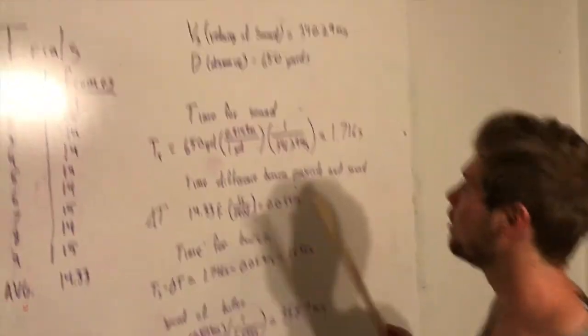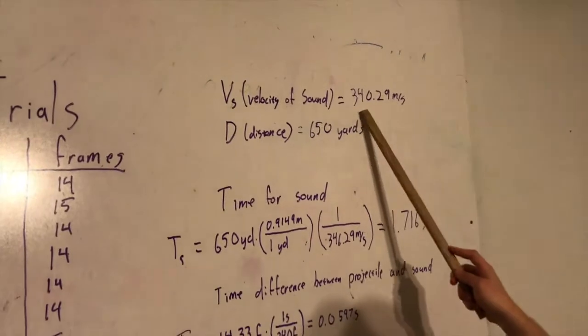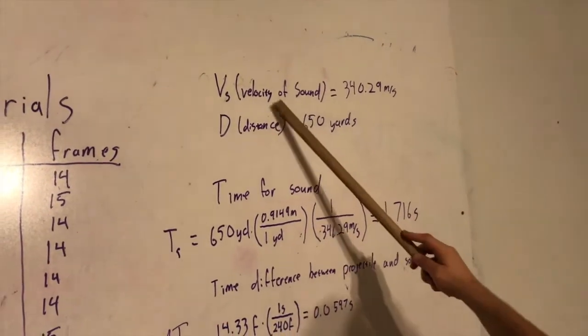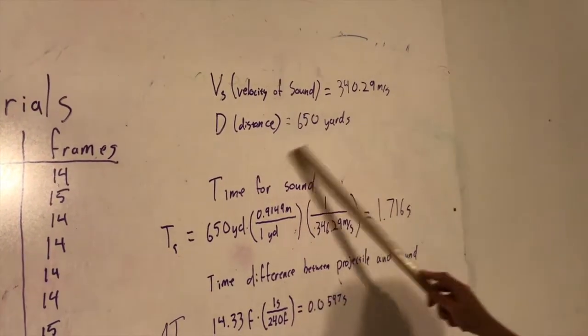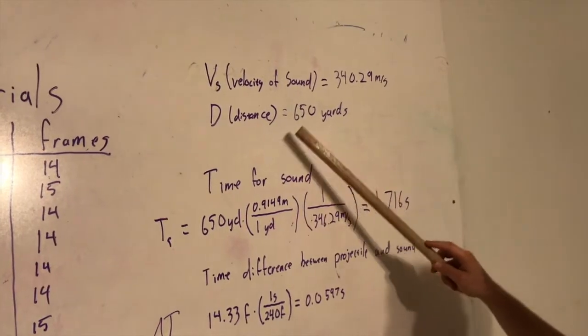Now time for the boring physics part. We have our two knowns here, 340 meters per second for the velocity of sound and 650 yards for the distance between the gun and the target.